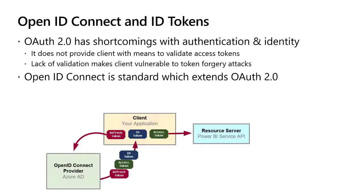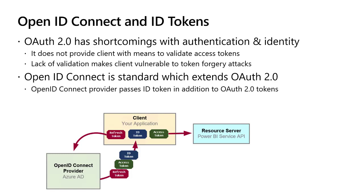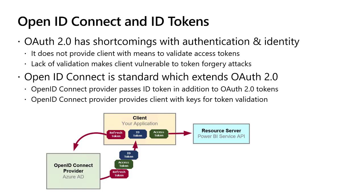OpenID Connect is a standard that extends and sits on top of OAuth 2.0. It adds another token: in addition to access tokens and refresh tokens, you also get ID tokens. OpenID Connect also provides a way for the client application — not just the resource server — to validate that the access tokens, ID tokens, and refresh tokens are authentic and came from who we think they came from.